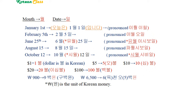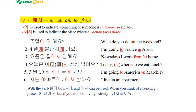Korean numbers are not easy to learn and not easy to teach either, so we will learn little by little. Now, the marker 에서 is used to indicate the place where an action takes place.